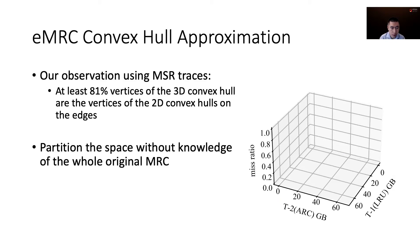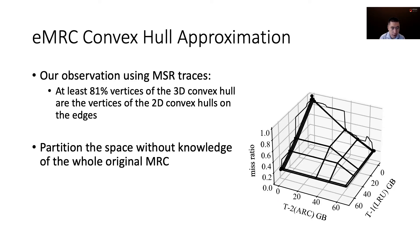First, we obtain the 2D MRCs on the two edges. Then we obtain the convex hull and the vertices of the two edges. After that, we construct grid regions using those vertices. And finally, we can remove cliffs within each region. This results in huge savings in computation time.